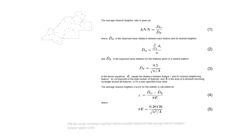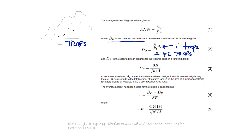Let's focus first on the calculation of the observed distance using our trap locations. In the calculation, d of i — where i represents the individual points and trap sites, so each individual trap — and n is going to be our total sample size, which is 42 traps. We're going to measure the distance between each feature and the nearest neighbor of that feature. As an example, these two points would be the nearest neighbors of each other.